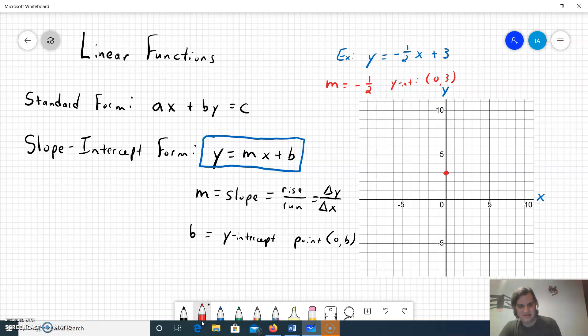This is change of y over change in x, so that negative could really go with either part. Basically what that means is we're going to go from our point down one because of the negative and then over two, and that's going to give us a second point. To get from zero three to our next point we went down one, right two, which brought us to two two.